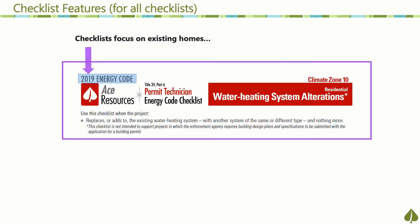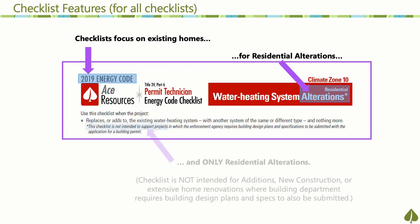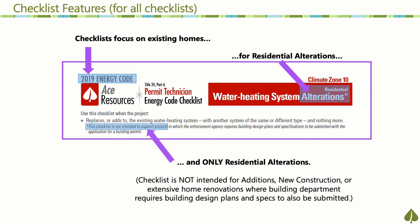These alteration projects involve only the existing home — for example, a simple re-roof or water heater change-out. Because the energy code has different requirements for additions and new construction, these checklists should not be used for those types of projects. Additionally, these checklists should not be used for extensive renovations of an existing home, or any projects requiring additional submission of design drawings.